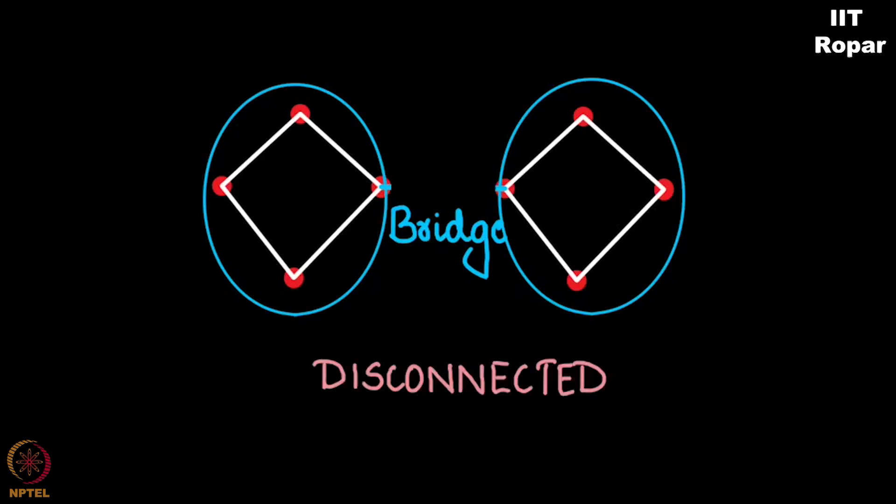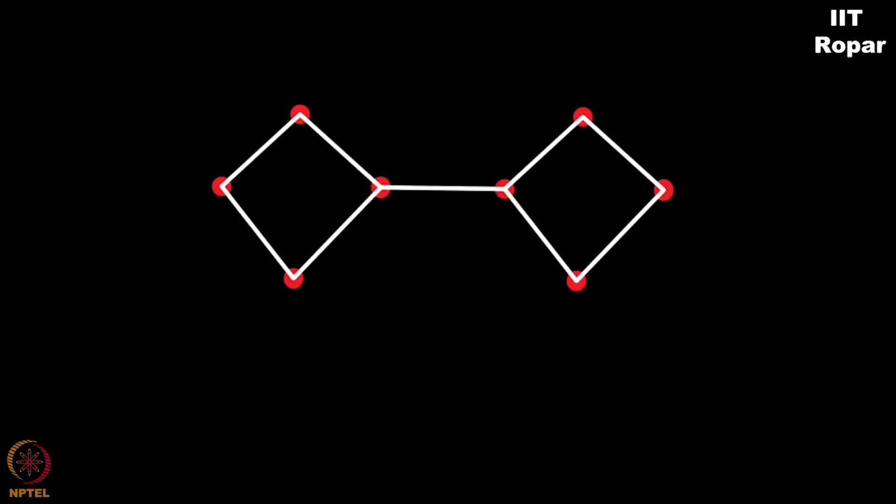This edge which was acting like a bridge between this portion and this portion is called a cut edge. Now what do we mean by cut edge?